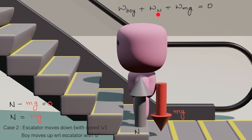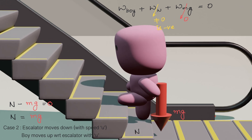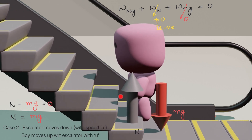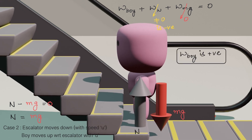From the work-energy theorem: work done by boy + work done by N + work done by mg = 0 (since change in KE = 0). Since there is no displacement for mg (the boy is at rest), work done by mg is 0. The point of application of N is moving downward while the force is upward, so work done by N is negative. Therefore, work done by the boy is positive — that is why even though the boy is not actually moving, he still gets tired.